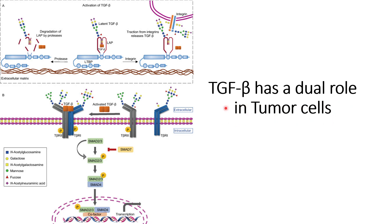However, during the later stage of pancreatic cancer, TGF-beta has a completely different role — it acts as a pro-tumorigenic factor. For example, it will promote metastasis of the cells and promote agents in the tumor microenvironment that help in suppression of the immune response.